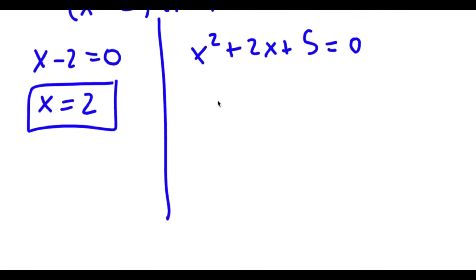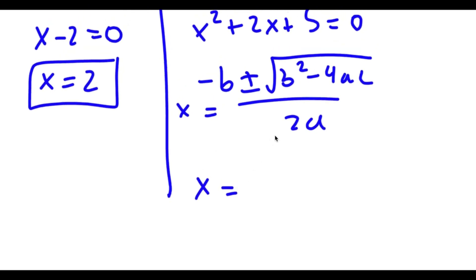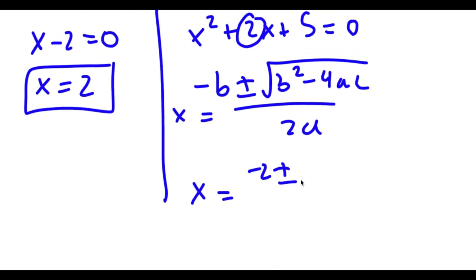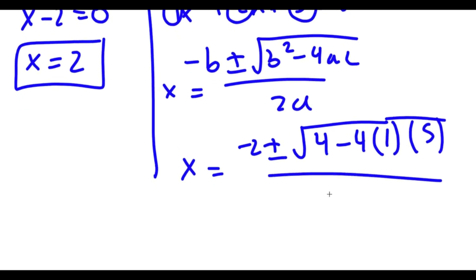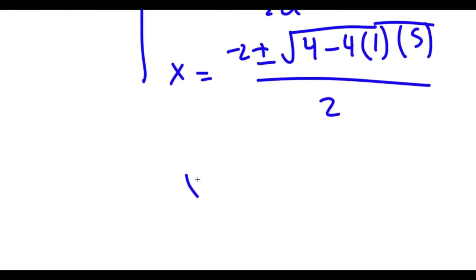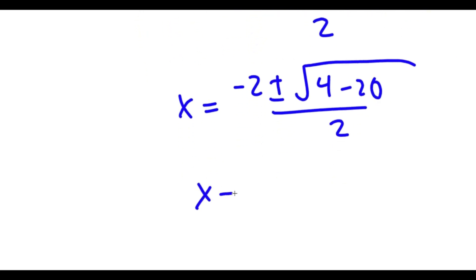For x squared plus 2x plus 5 equals 0, I can use the quadratic formula: negative b plus or minus the square root of b squared minus 4ac all over 2a. With b equal to 2, I have negative 2 plus or minus the square root of 4 minus 4 times 1 times 5, all over 2. This gives negative 2 plus or minus the square root of 4 minus 20 over 2, which equals negative 2 plus or minus the square root of negative 16 over 2.